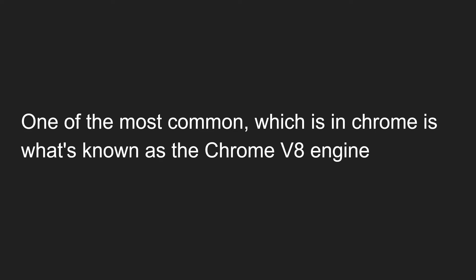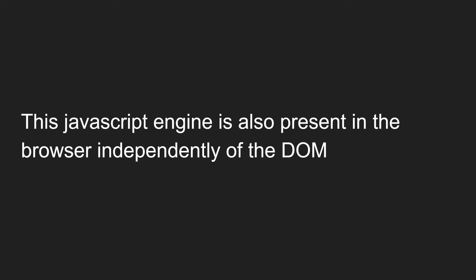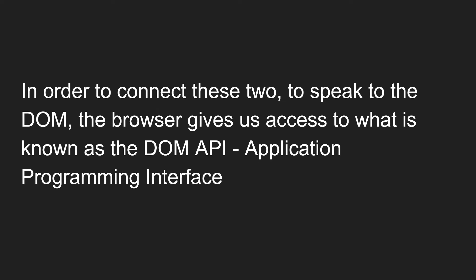One of the most common JavaScript engines is Chrome's V8 engine, which executes the JavaScript programming language in Chrome. The JavaScript engine is also present in the browser independently of the DOM. In order to connect these two and allow them to speak, the browser gives us access to what is known as the DOM API - where API stands for Application Programming Interface.